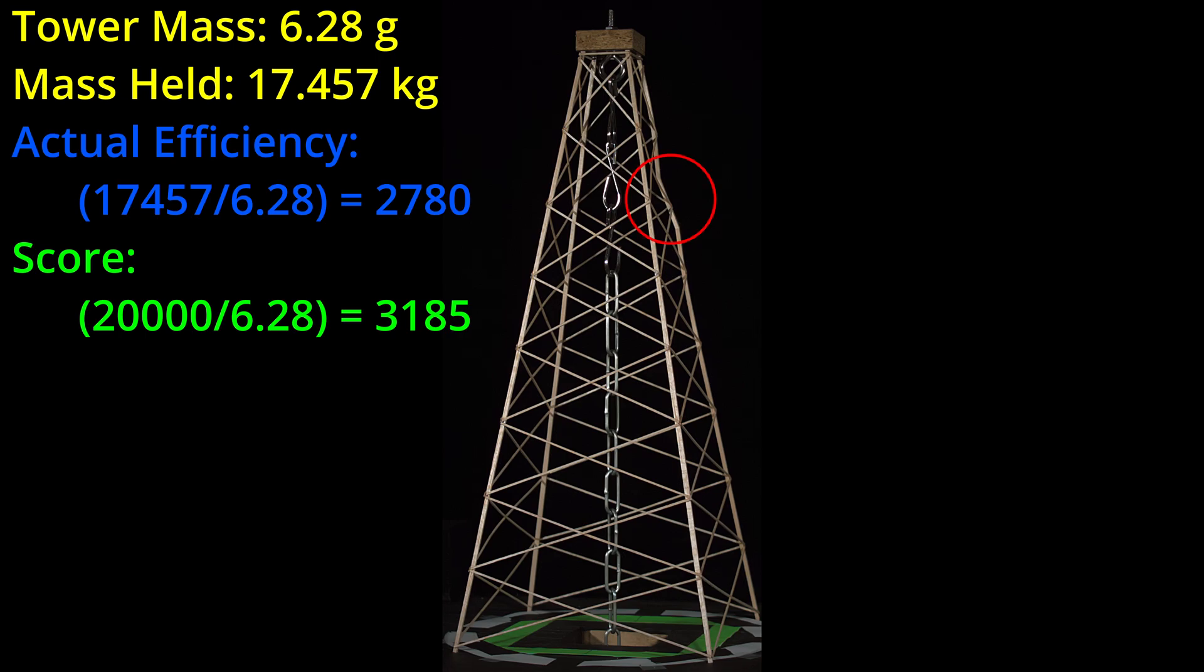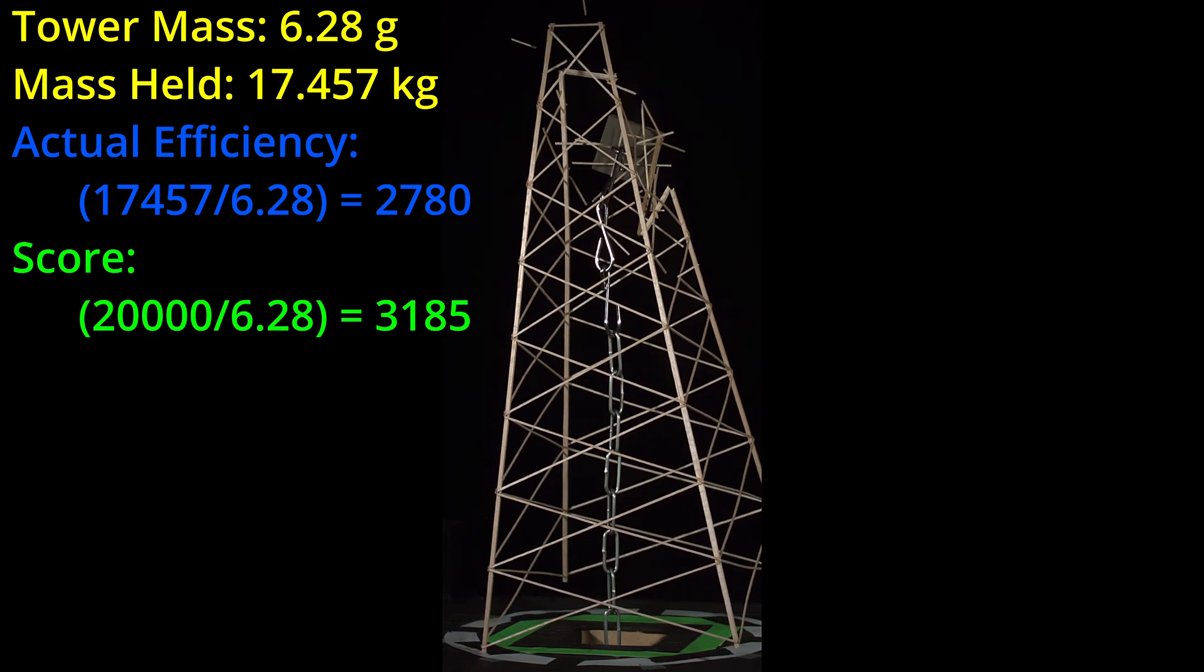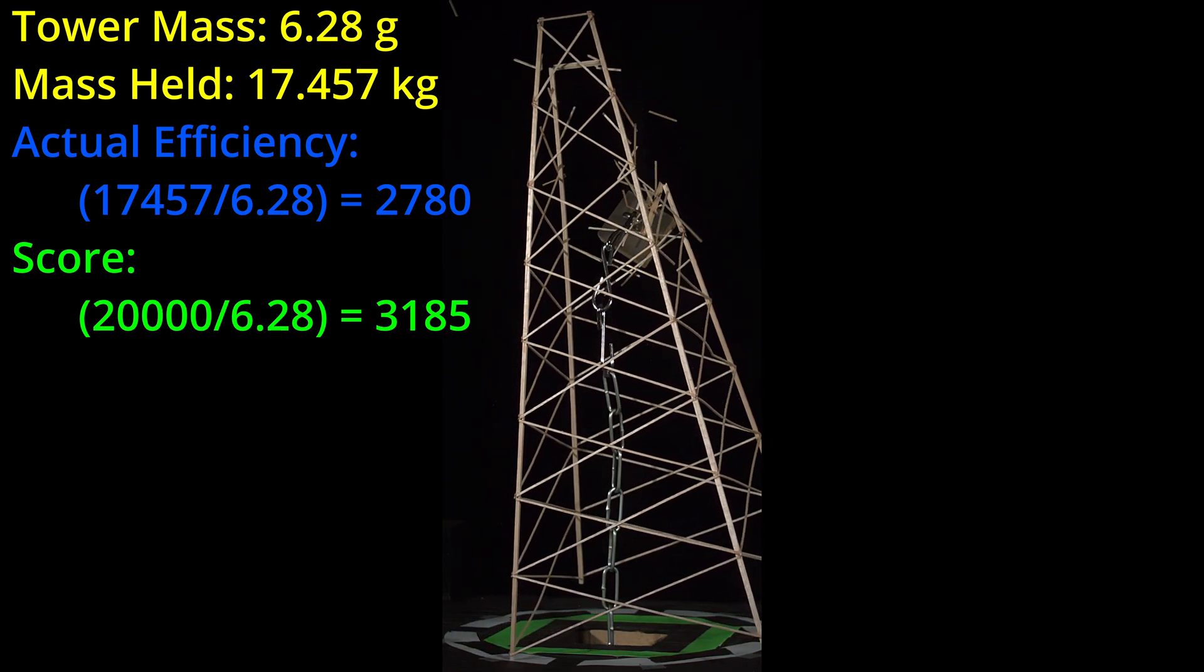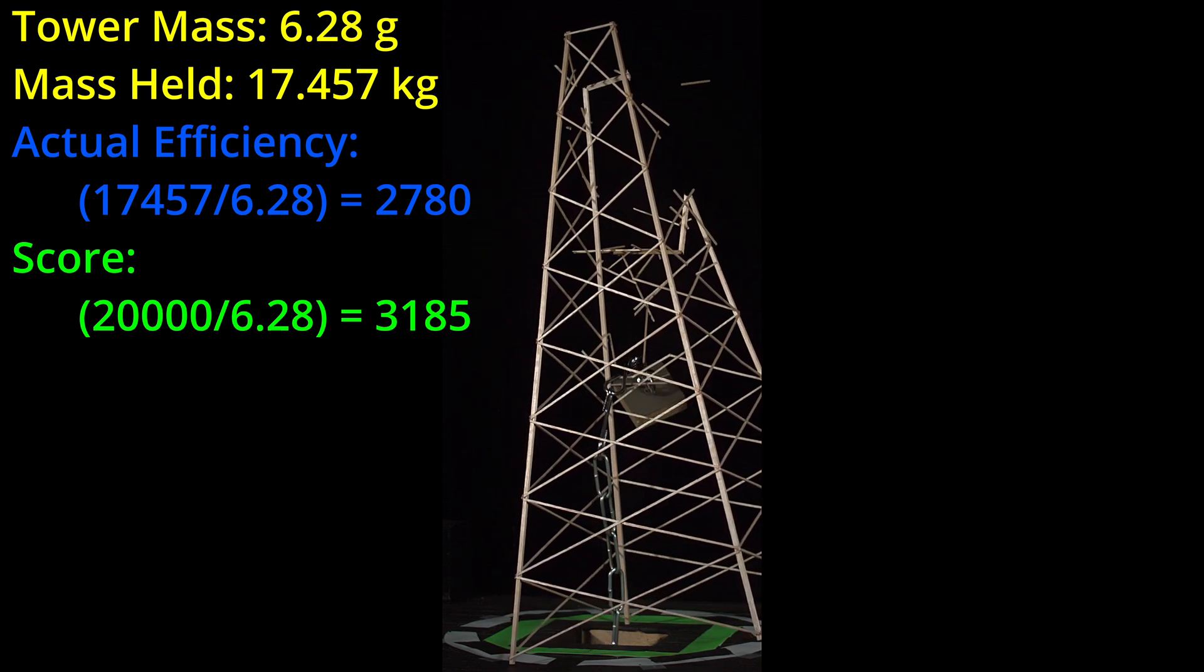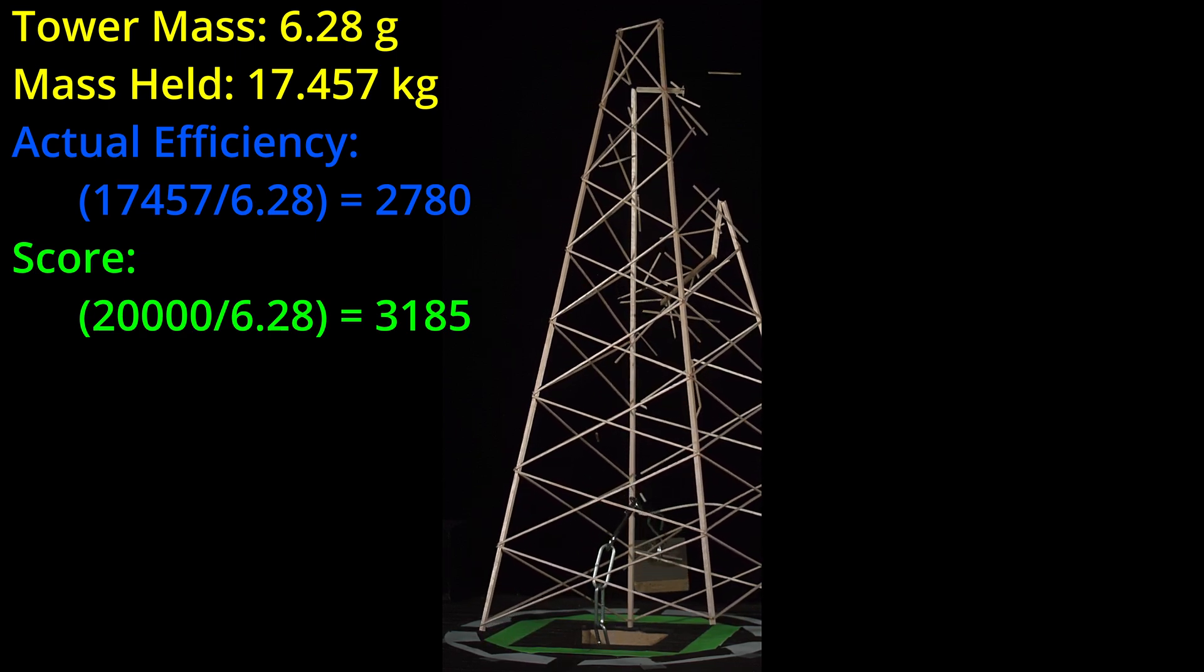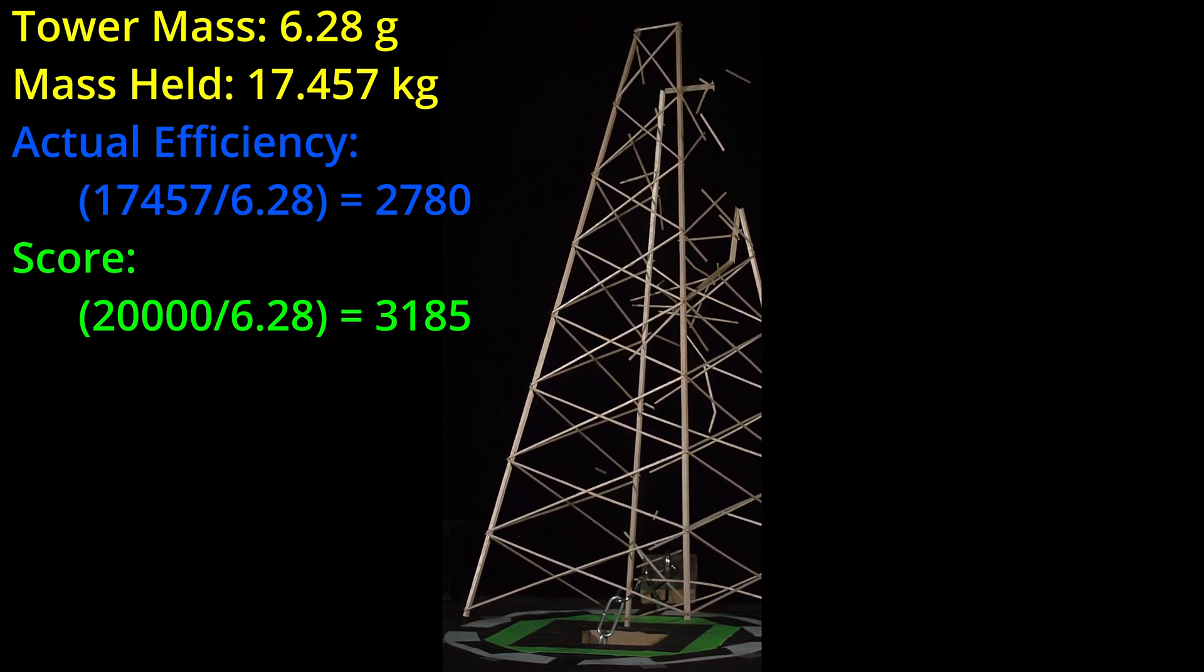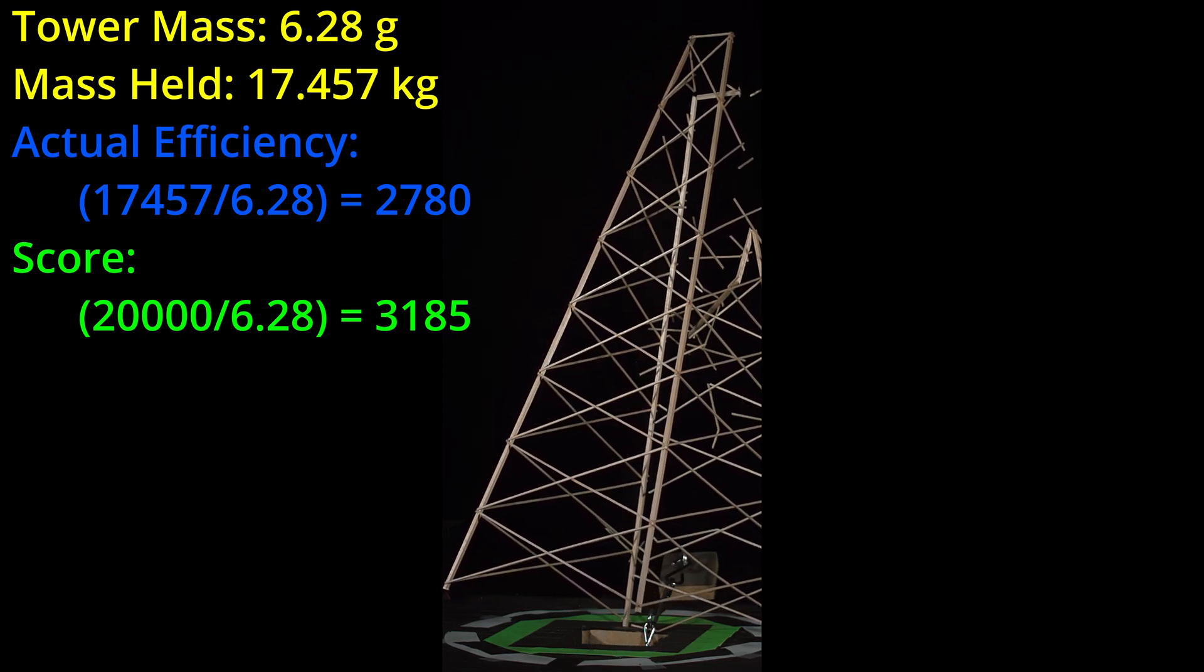It looks like this tower had a leg failure near the top. To put this build in perspective, it would have the same competition score as a 4.71 gram non-bonus tower holding the full load. That is very good, but not quite beating the 3409 benchmark tower I showed in the previous video. Let's see what happens if we try and reduce the mass a bit to potentially beat that score.